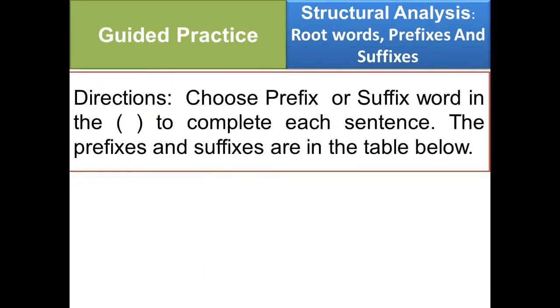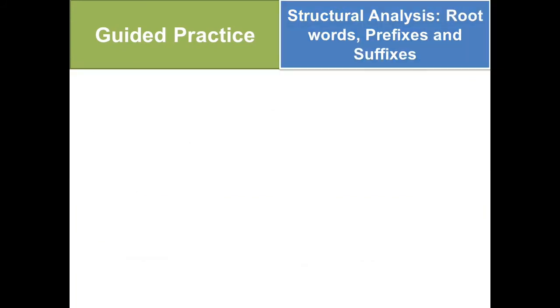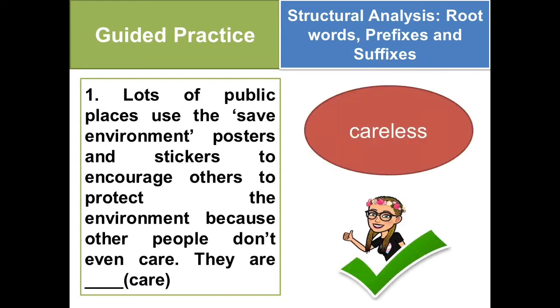Now, let us practice your understanding. Let's try a few items as practice exercise. Directions: Choose prefix or suffix word in the parentheses to complete each sentence. The prefixes and suffixes are in the table below. Prefix and suffix: less, mis, shon. Number 1: Lots of public places use Save Environment posters and stickers to encourage others to protect the environment, because other people don't even care. They are blank. The answer is careless. Very good. I will give you two claps. The answer is careless. Add the suffix 'less' to the root word care. The sentence shows that people are not worried or not giving attention about the environment.